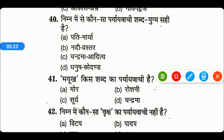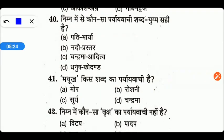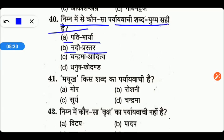Next आते हैं: निम्नलिखित में से कौन सा पर्यायवाची शब्द युग्म सही है? Options are पती-भार्या, नदी-प्रस्तर, चंद्रमा-आदित्य, या धनुष-कोदंड। तो friends, यहाँ पर D जो है वो हमारा सही है — धनुष-कोदंड।